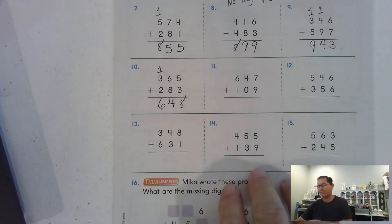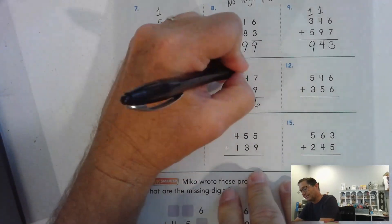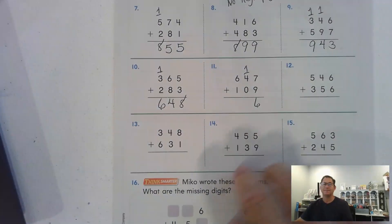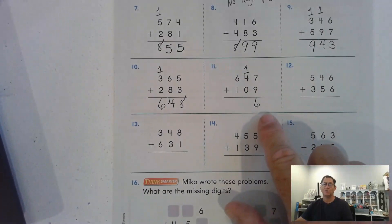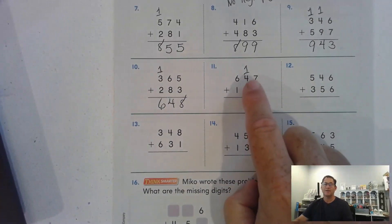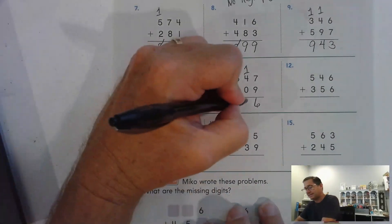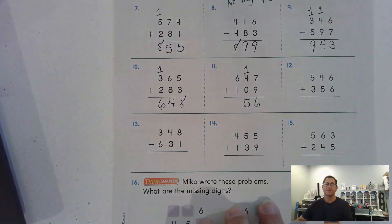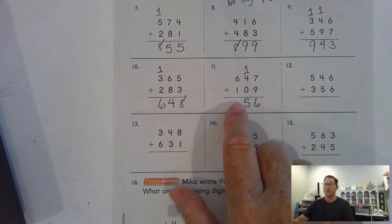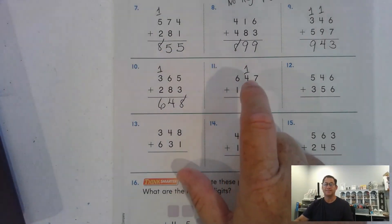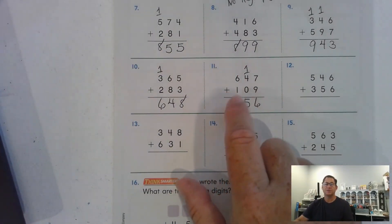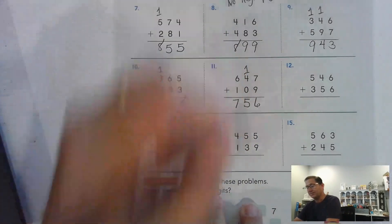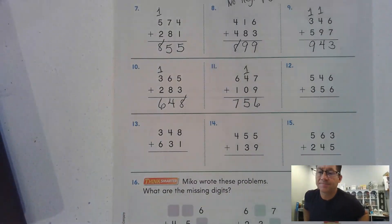Nine and seven ones is sixteen ones — regroup that as one ten and six ones. Four tens and one ten is five tens — we don't have to regroup the tens. Six hundred plus one hundred, seven hundred — we won't have to regroup the hundreds.